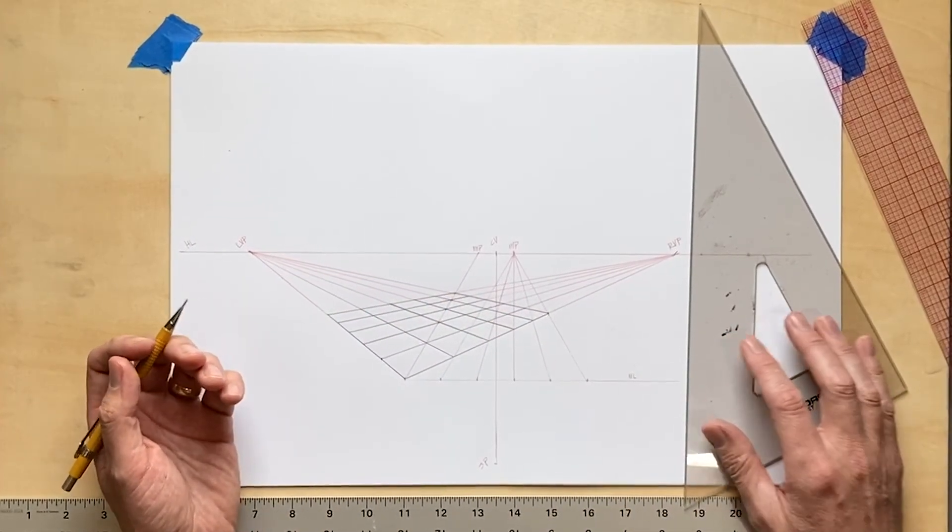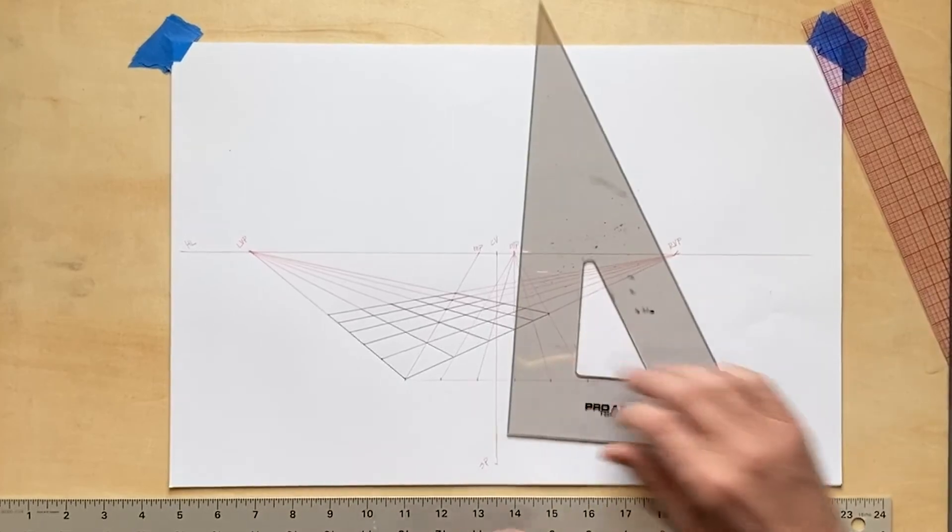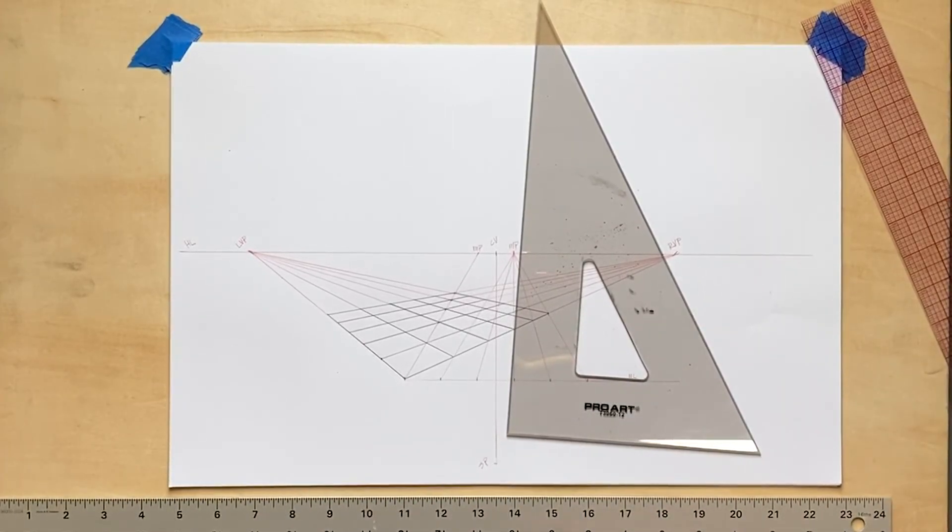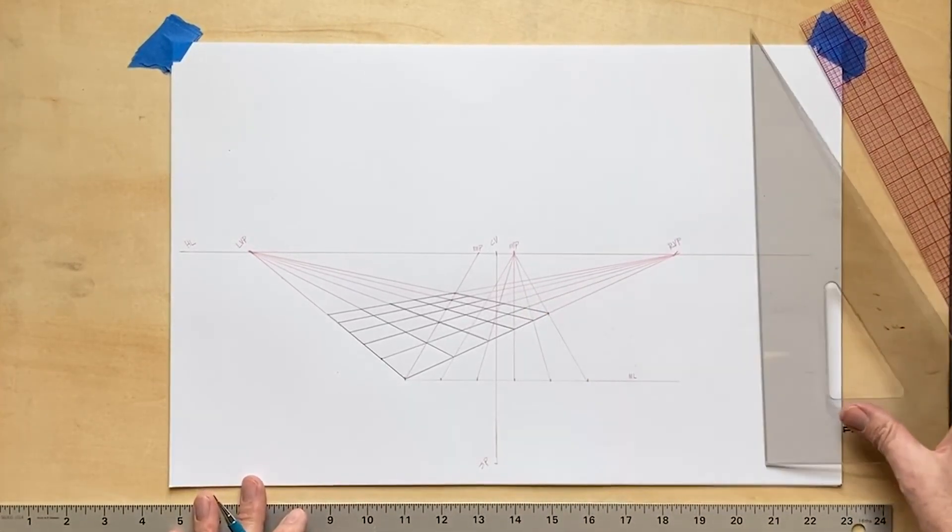Well, there you have it. A gridded floor plane in two-point perspective. Now, why don't you try your hand at doing it? Thanks for watching.